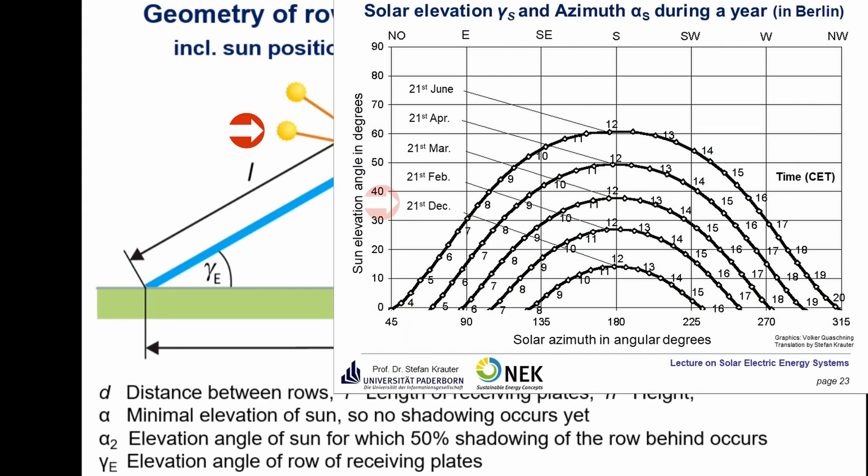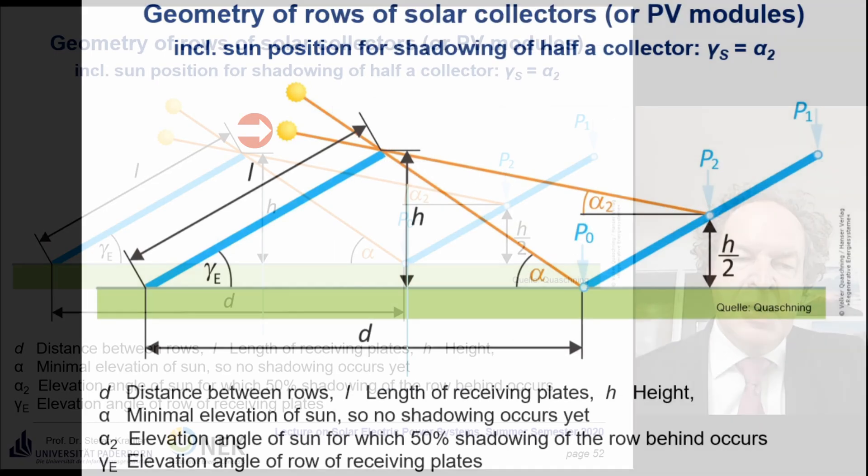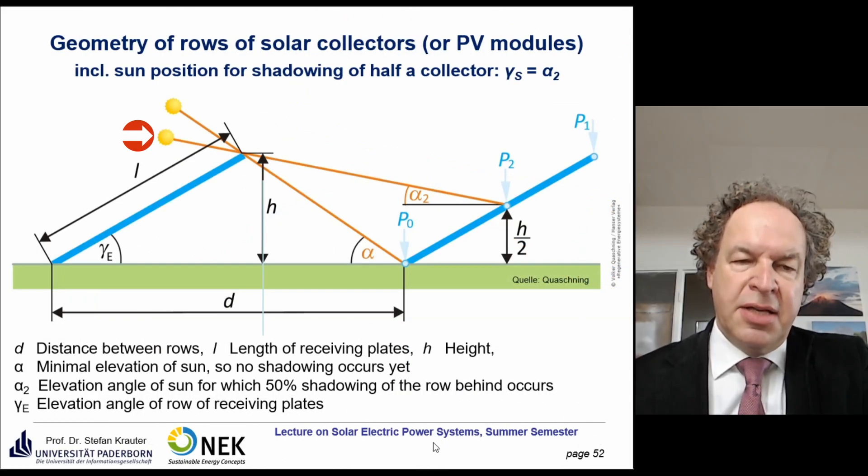We learned that the lowest position of the sun in winter, 21st of December for example, is about 14 degrees, so quite low. And the exercise is exactly about that.